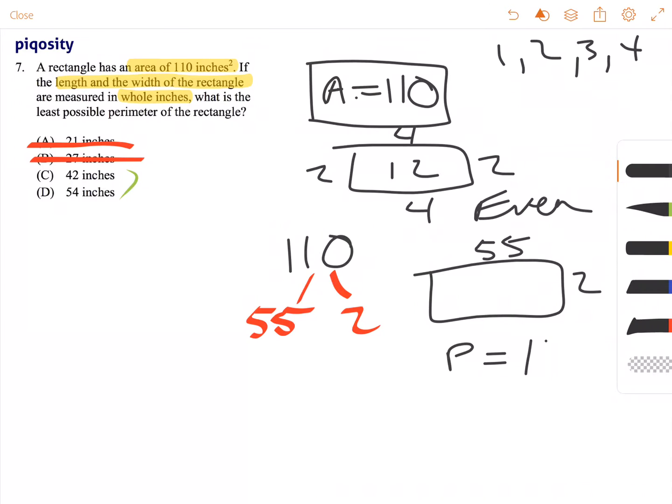So that doesn't quite work here. So if we do another set of factors, break that down, why don't we try 5, since 5 is a factor of 10. So 5 goes into 110, 22 times.